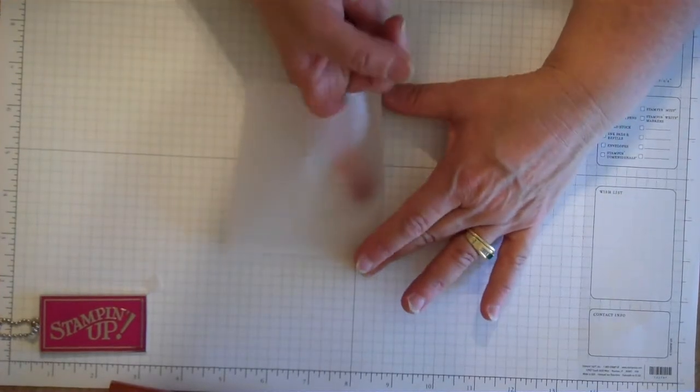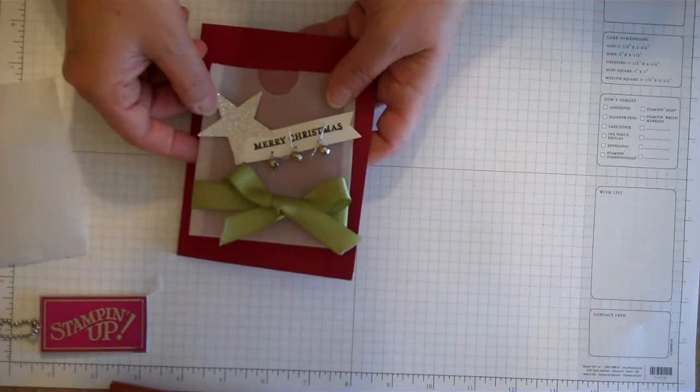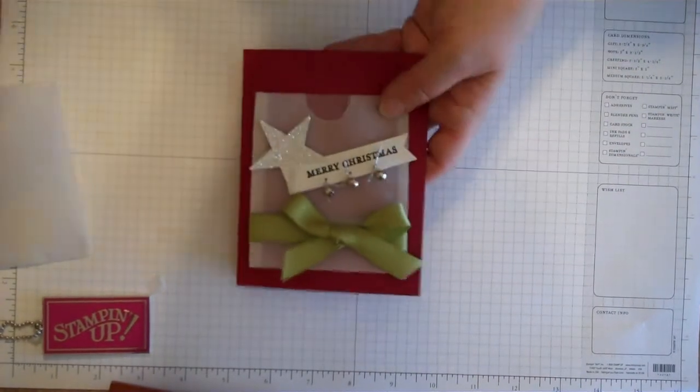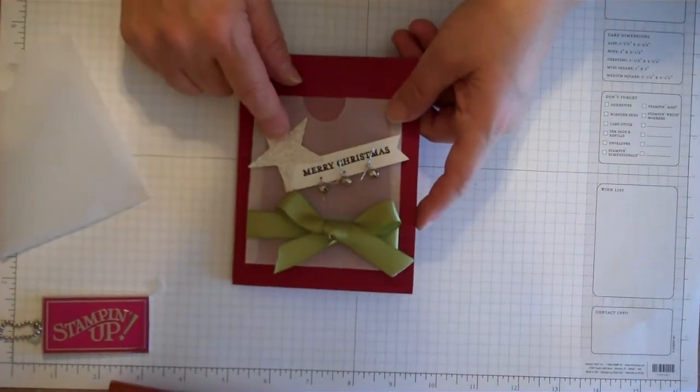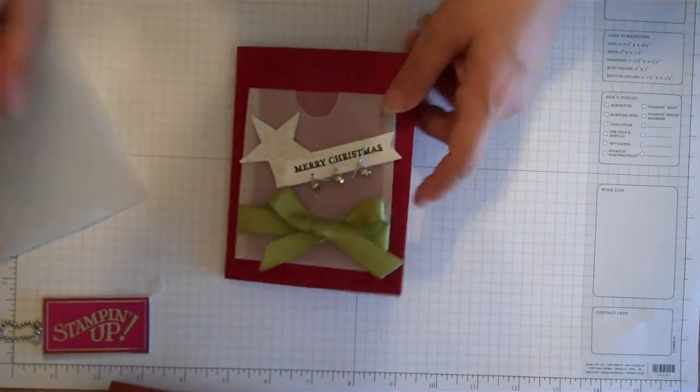So again, it's really simple to make. I went ahead and decorated mine with Christmas, but you can do any kind of decorations you want on it. I actually punched out a star, put some little jingle bells on there and made a real cute little pocket.